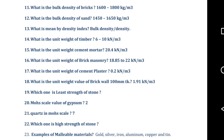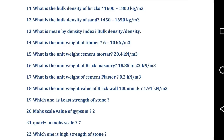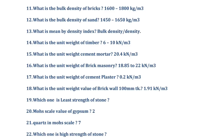What is the unit weight of cement mortar? It is 20.4 kilo Newton per meter cube. What is the unit weight of brick masonry? It is 18.85 to 22 kilo Newton per meter cube. What is the unit weight of cement plaster? It is 0.2 kilo Newton per meter cube. What is the unit weight of brick wall for 100 mm thick? Its value is 1.91 kilo Newton per meter cube.